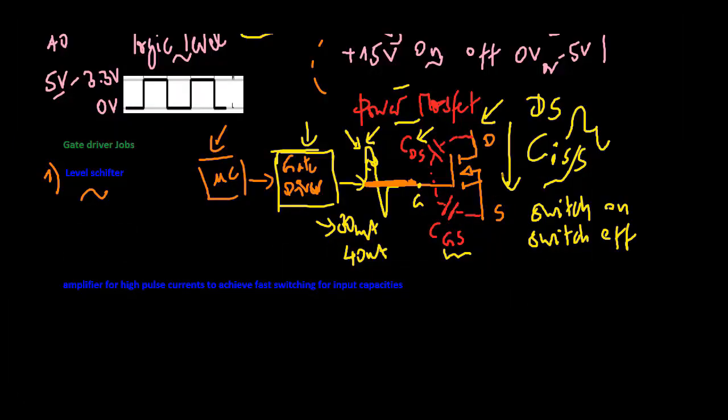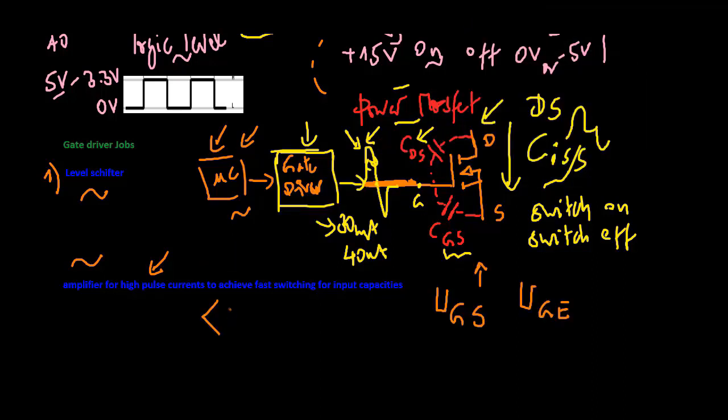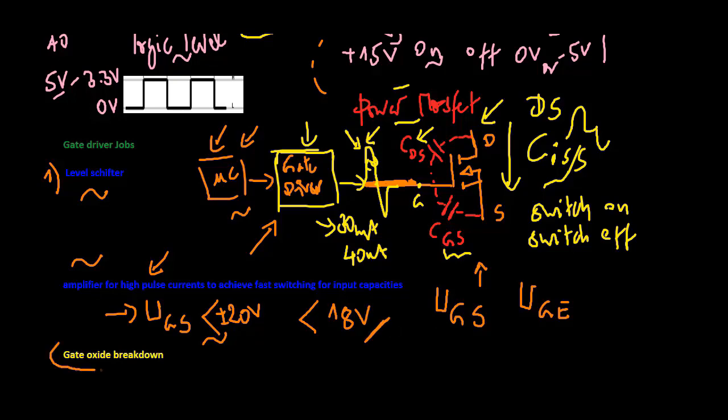This gate driver IC will almost always have additional internal circuits for greater functionality, but it primarily works as a power amplifier and a level shifter. Now there is at least one more restriction: the voltage must also remain within certain limits. The amount of UGS or the amount of UGE must typically be less than plus/minus 20 volts or 18 volts. We are not allowed to operate the gate oxide in breakdown at this point, otherwise the power switch will be destroyed. This is another task which the driver has.